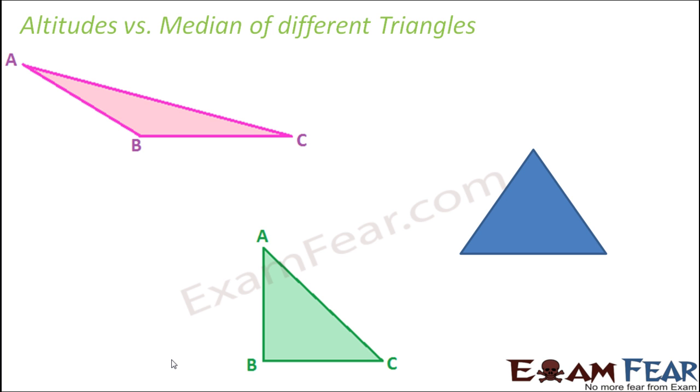So let us first draw altitudes on side BC of each of these triangles. Let us name this triangle also. This is ABC. Now for all three triangles we are going to draw the altitudes on side BC. That means we are going to draw altitude from the vertex A for each of them.